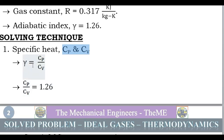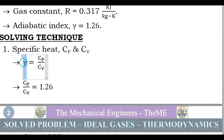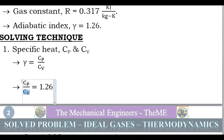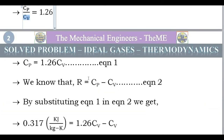Using the adiabatic constant formula: gamma = Cp/Cv. We know gamma = 1.26, so 1.26 = Cp/Cv. Bringing Cv to the right-hand side gives us Cp = 1.26·Cv. Consider this as Equation 1.